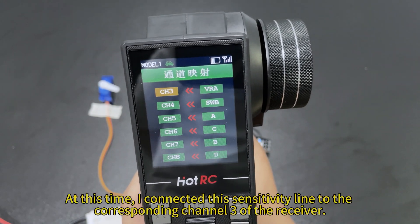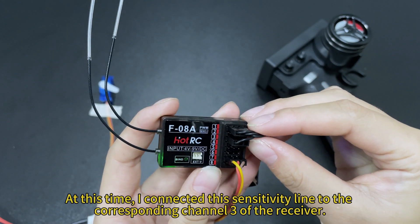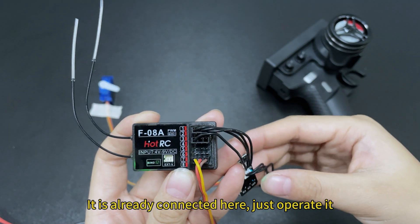At this time, I connected this sensitivity line to the corresponding channel sign of the receiver. It is already connected here. Just operate it.